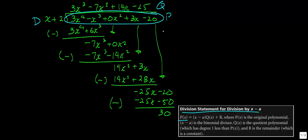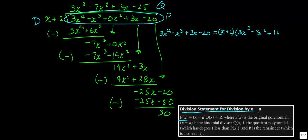We take our original polynomial: 3x to the fourth minus x cubed plus 3x minus 20. Notice how I didn't write the missing term, because we don't need to at this stage. We have our divisor, x plus 2 — I'll put brackets around it. Then we take our quotient: 3x cubed minus 7x squared plus 14x minus 25. And last but not least, we add the remainder, which is positive 30.